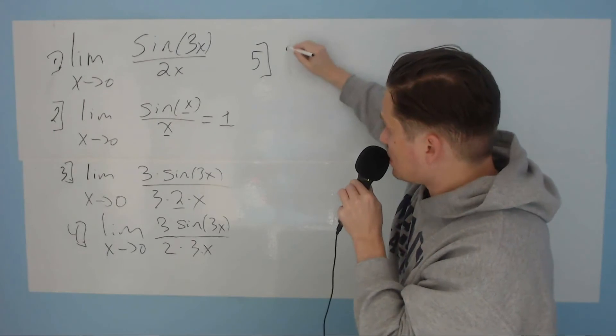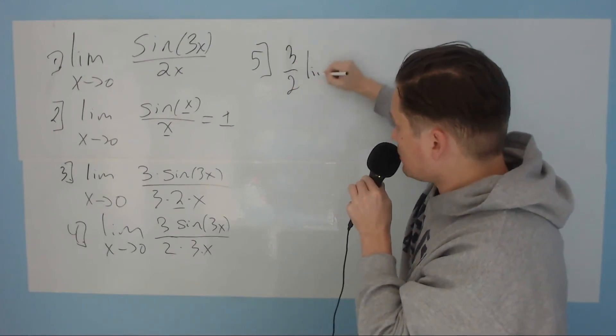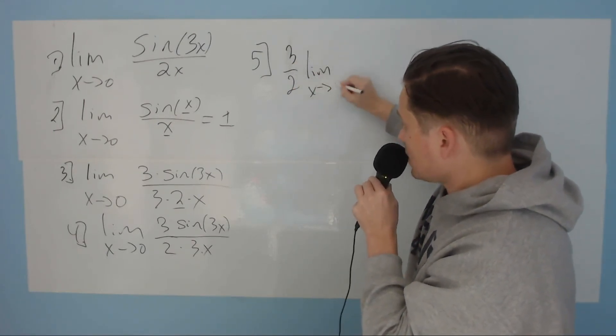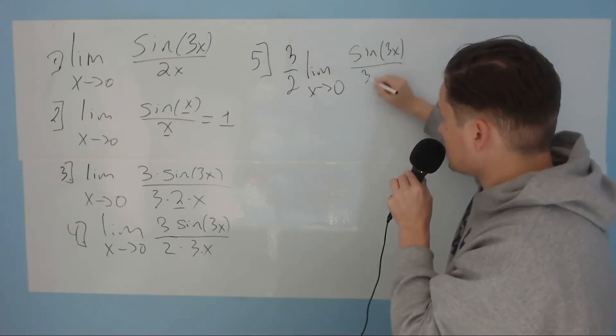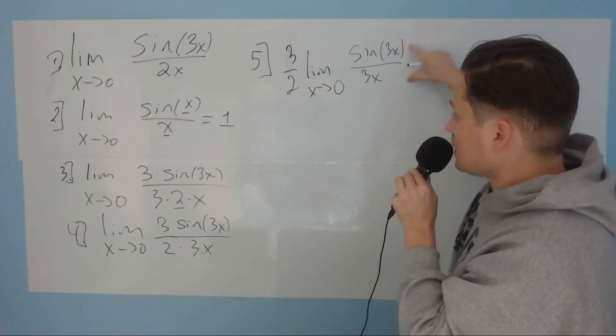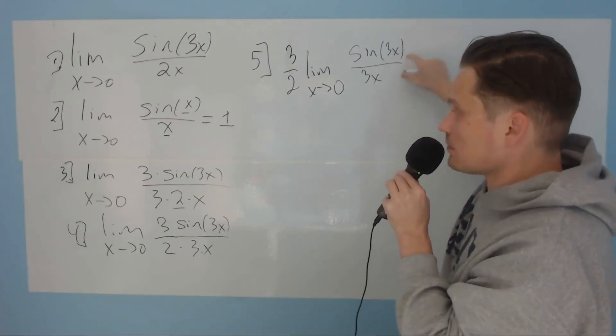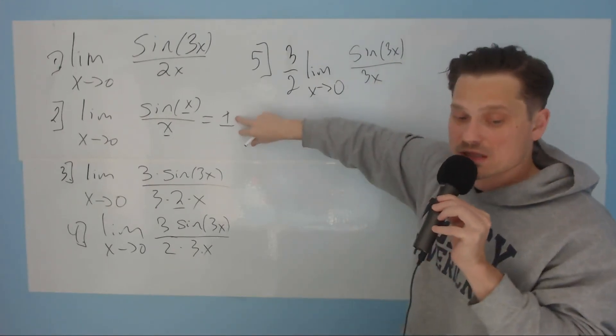It becomes 3 halves, the limit as x approaches 0, and then here, this is sine of 3x over 3x. And now this limit right here, the remaining one, has the value 1, because it conforms to the form in step number 2.